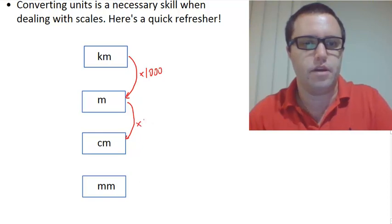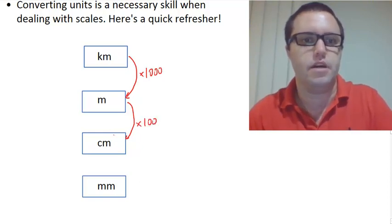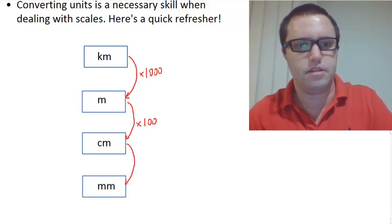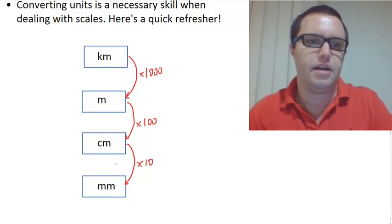100 centimeters in a meter. To go from centimeters to millimeters, you'll be multiplying by 10, because there's 10 millimeters in a centimeter.